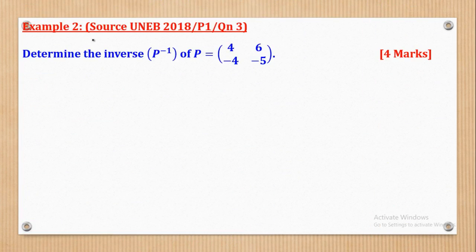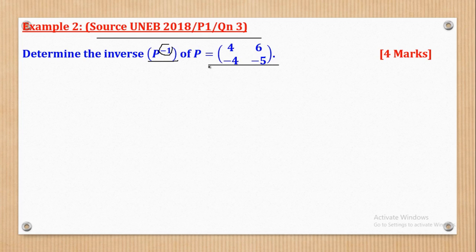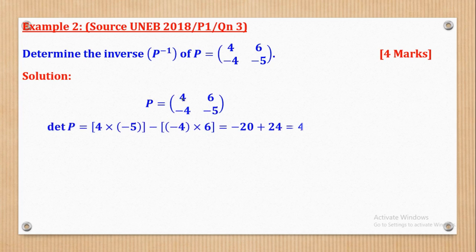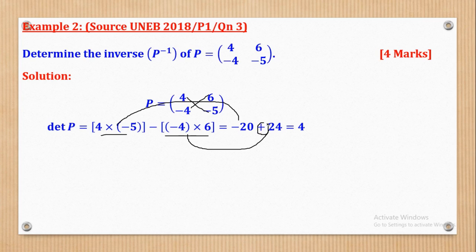Example 2 came from UNEB 2018, paper 1, question 3. It says: determine the inverse P to the power of negative 1 — each time you see this power of negative 1, it means inverse of that matrix — of matrix P = [4, 6, -4, -5]. First, get the determinant: 4 times negative 5 gives negative 20, minus negative 4 times 6. The two negatives cancel to give a positive, so negative 20 plus 24 gives positive 4 as our determinant.